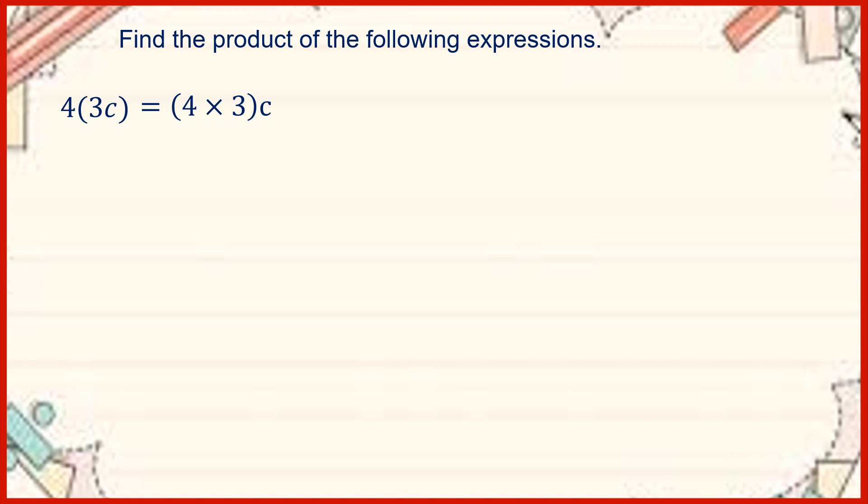Now let us have some examples. Supposing we need to multiply 4 times 3c. We are going to multiply 4 times 3, then keep the variable c. So we have 12c, since 4 times 3 is equal to 12.